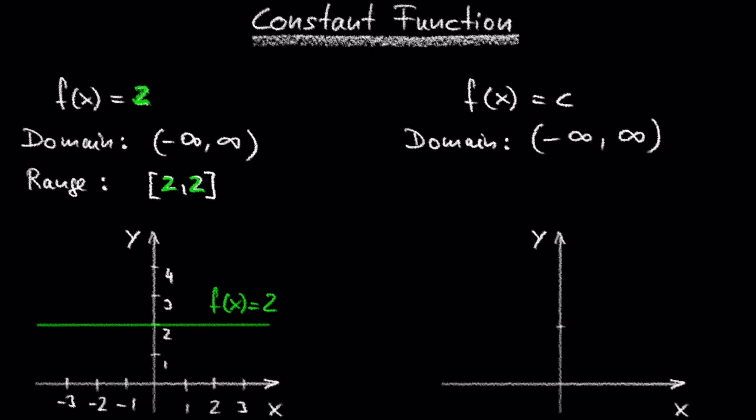The only output value is the constant c. So in interval notation, this is written as c, c. The interval that both begins and ends with c.